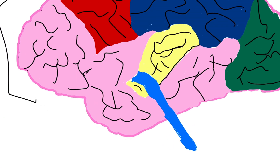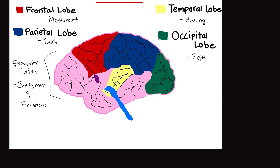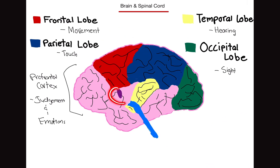Here's something interesting. Say you managed to hurt someone right here — this is the gustatory cortex. If you hit someone here, they won't be able to taste anything. It's quite interesting what damage to specific brain areas can do.